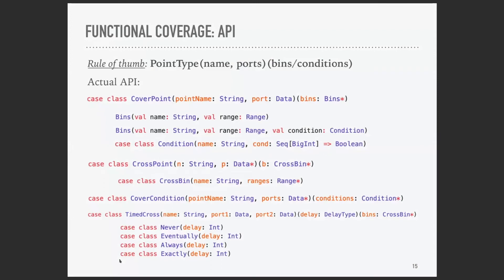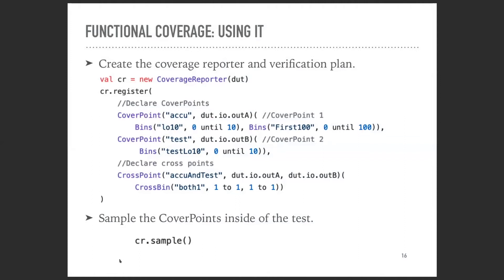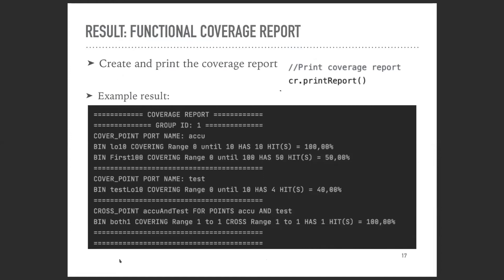The coverage reporter is what will be used to create our verification plan. This slide with code shows how to use it. We use our point type, give it a name and a set of ports, then bins or conditions depending on what we're trying to do. Here's an example of how we would define a verification plan. First we create our coverage reporter and register our verification plan using the register method. Here, for example, we're creating a set of regular cover points, each having a couple of bins and a cross point at the end. Throughout our tests, every time our outputs associated to cover points have an updated value, we sample them using the sample method. Finally, we can generate our report either by calling the report method or we can print out the reports.